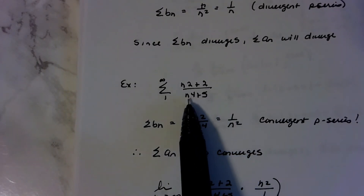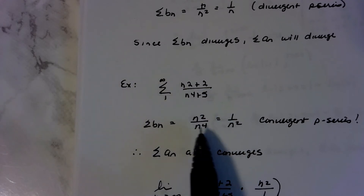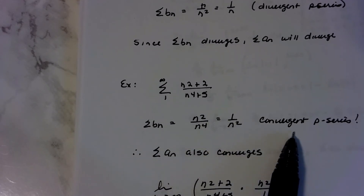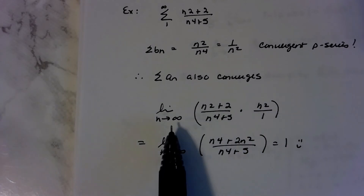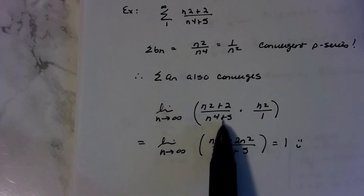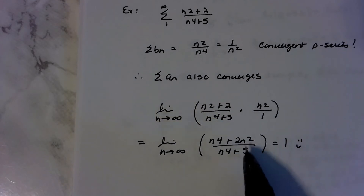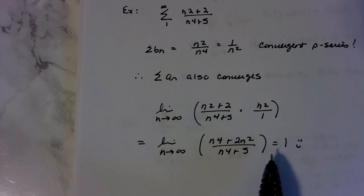Here's another example. I don't know what to do, so I'll try the comparison test — take the biggest thing in the numerator and denominator, write it as a ratio and simplify. That gives a convergent p-series. If I had to show it on a free-response question, I'd show the limit of the original times the reciprocal of the created expression. N squared times n squared gives a fourth-degree numerator, same as the denominator, so the limit is 1. Since the limit equals a number, this series converges.